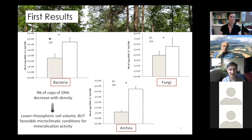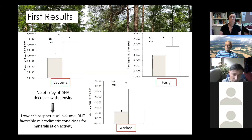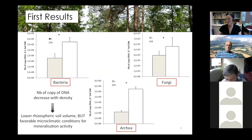Concerning diversity, we have conducted some qPCR and analyzed the number of copies of DNA for bacteria, fungi, and archaea. Under low density plots, we observe a reduced number of copies of DNA for bacteria, fungi, and archaea. We can explain this by the fact that we most probably have lower rhizospheric soil volume under low density plots. However, we observe that due to favorable microclimatic conditions, this microbial community is more active under low density plots.